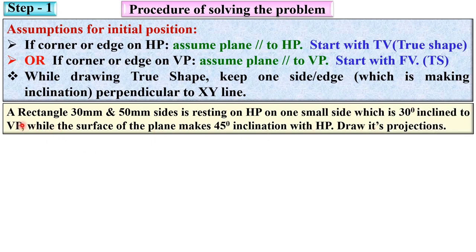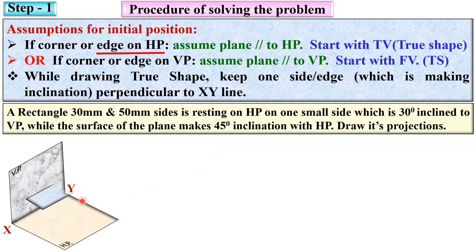Consider this problem: a rectangle 30 mm by 50 mm side is resting on HP. The word 'side resting on HP' means the edge is on the HP, so you have to assume the plane is parallel to HP for this problem, and your plane must be parallel to HP.